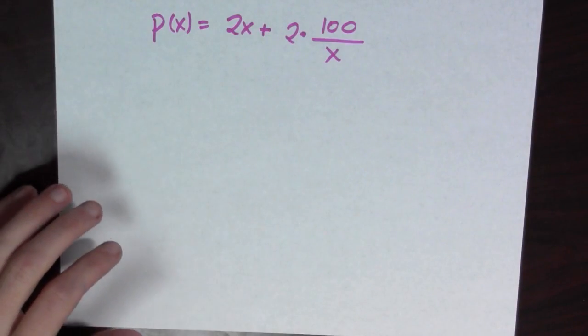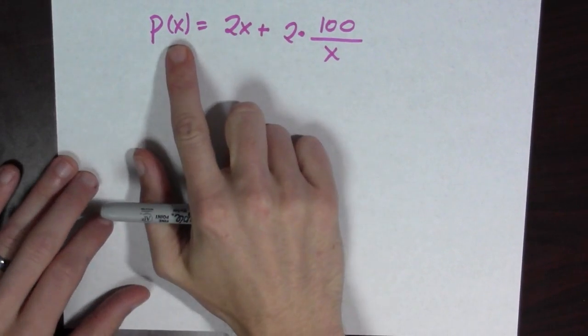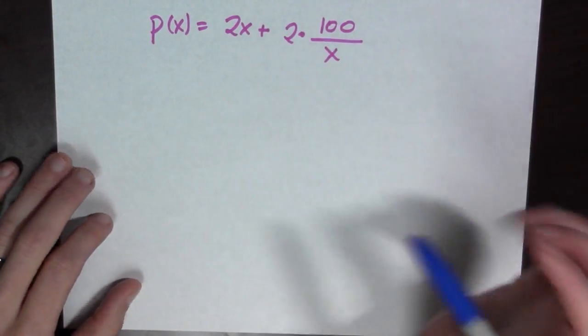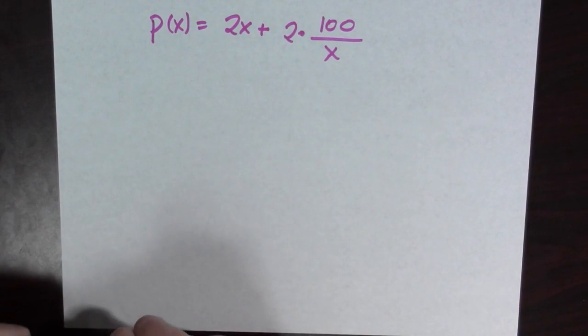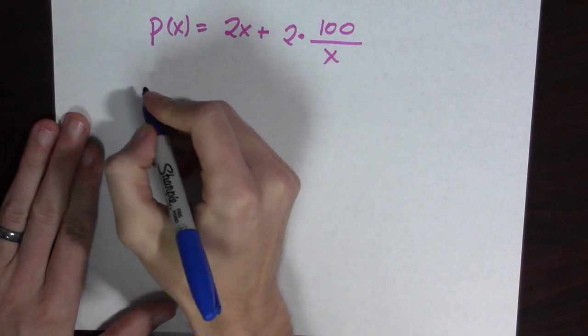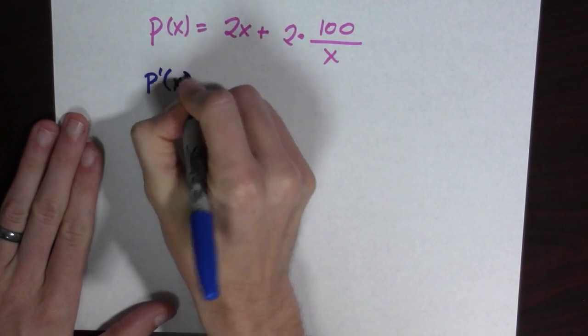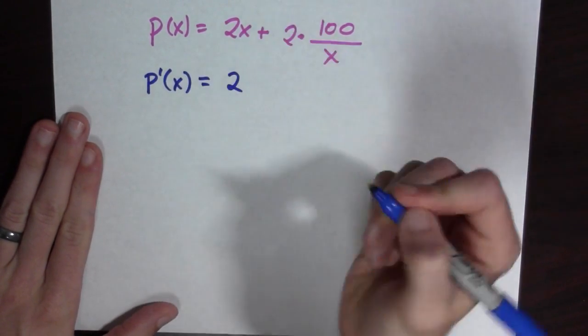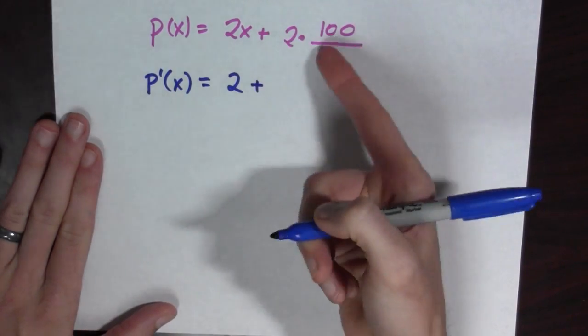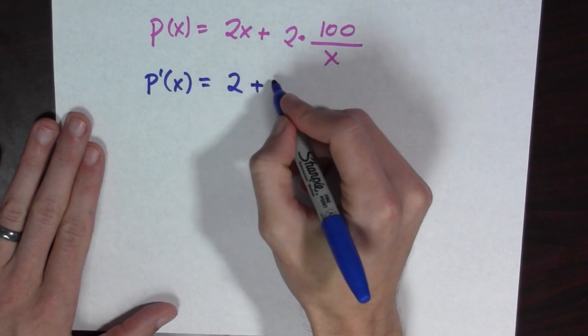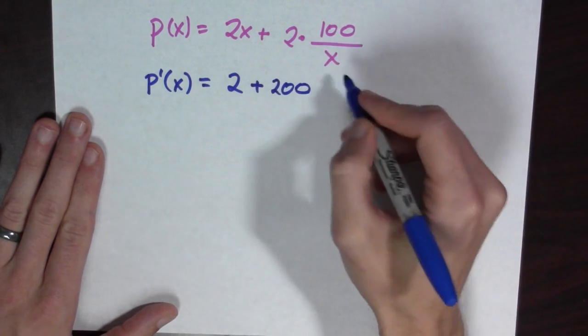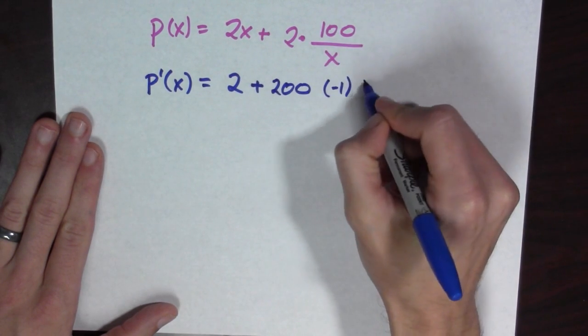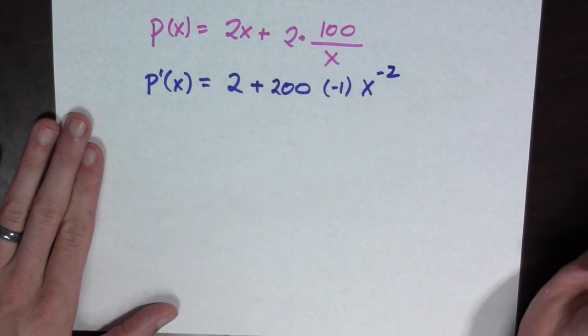Alright, let's look at this again. So we have the perimeter with respect to x is equal to 2x plus 2 times 100 over x. Alright, so now let's take the derivative. p prime of x is equal to 2 plus, okay, this is 2 times 100 over x. So this is going to be 200 times negative 1 times x to the minus 2.